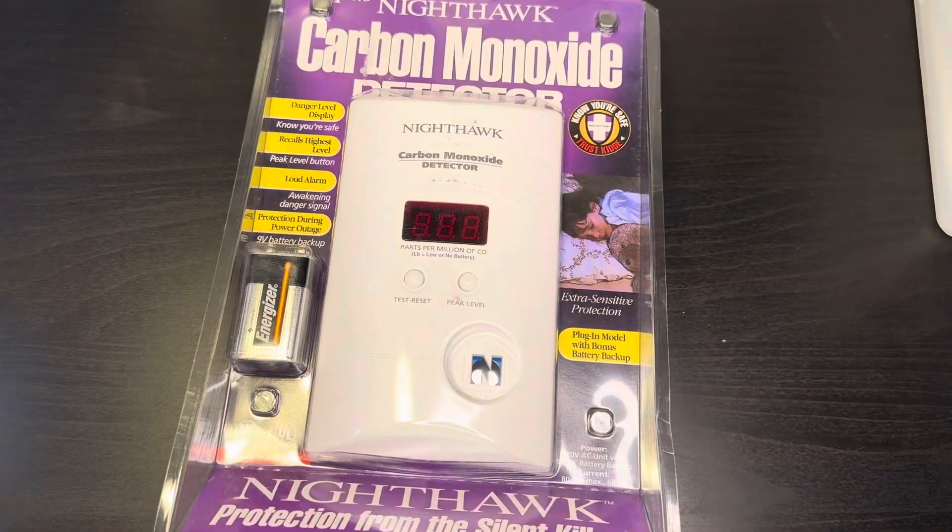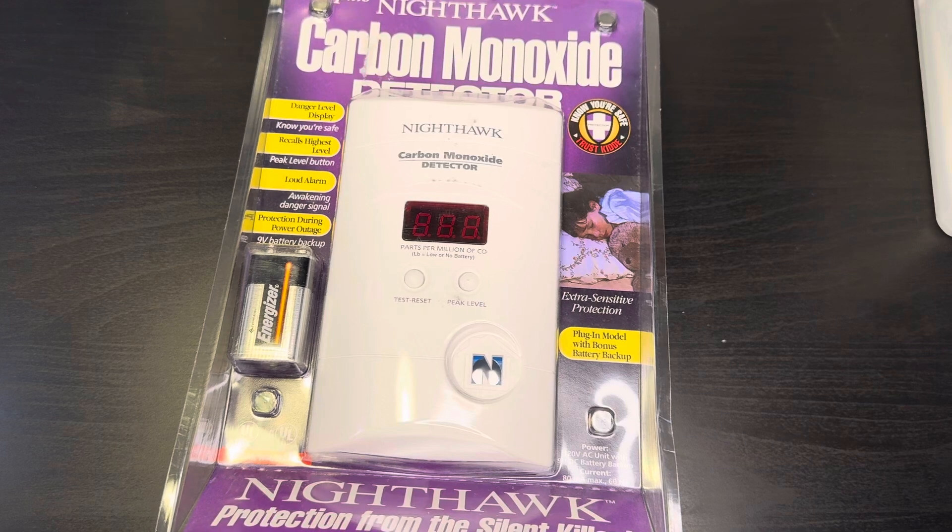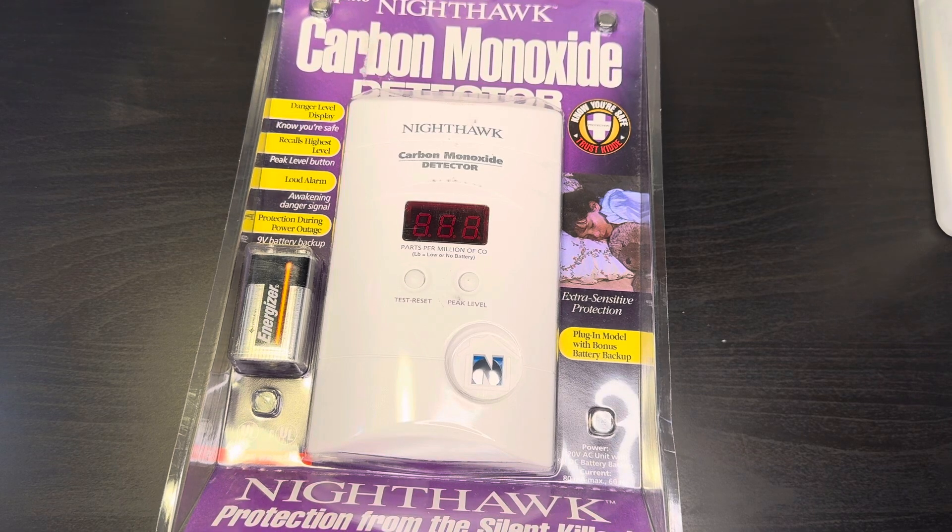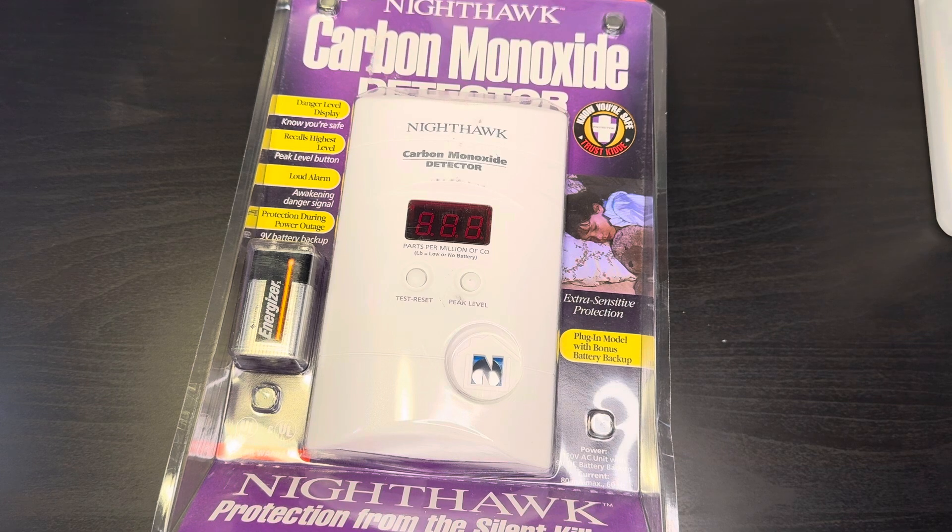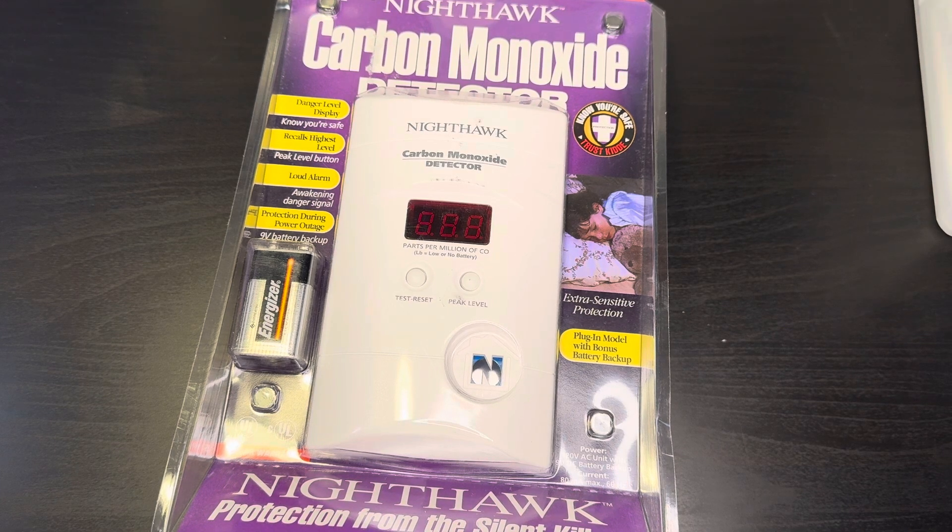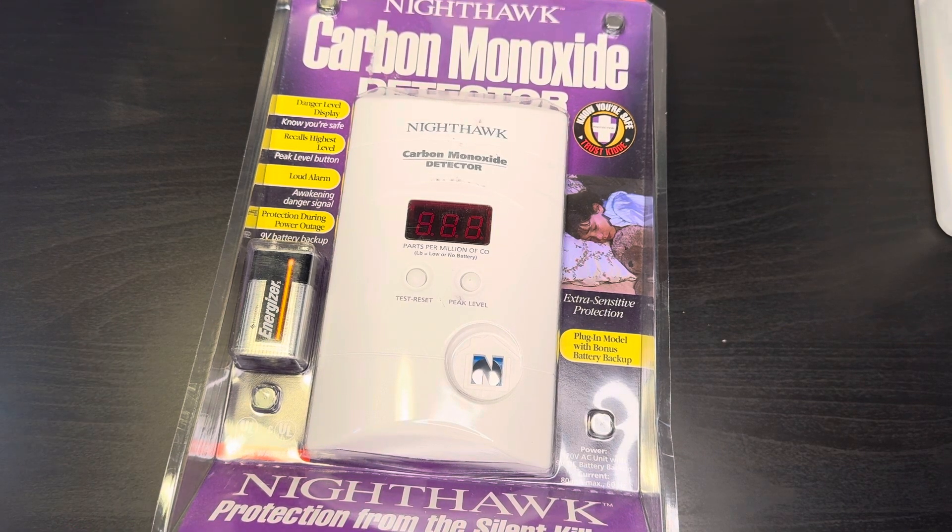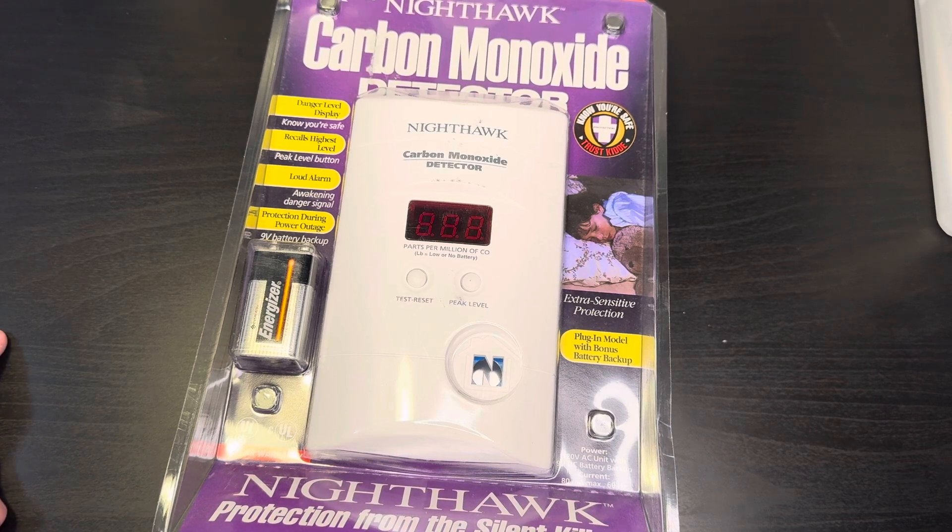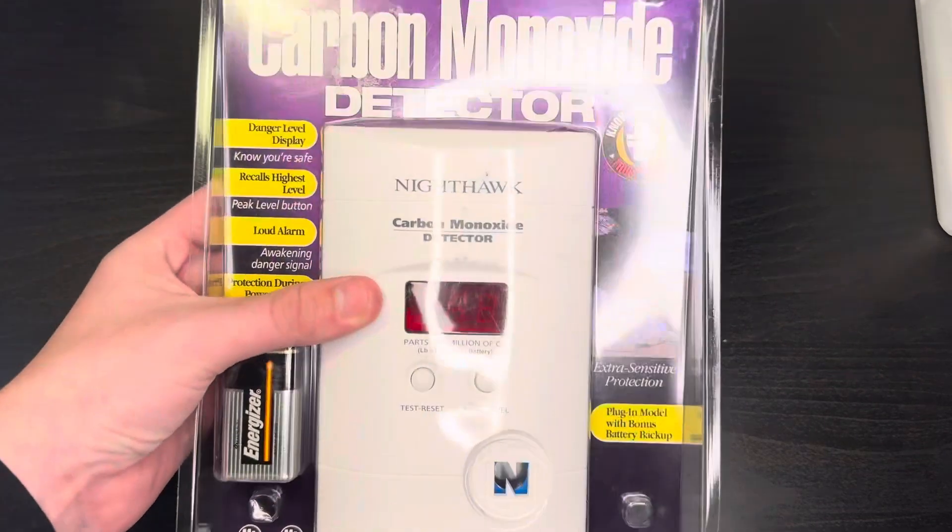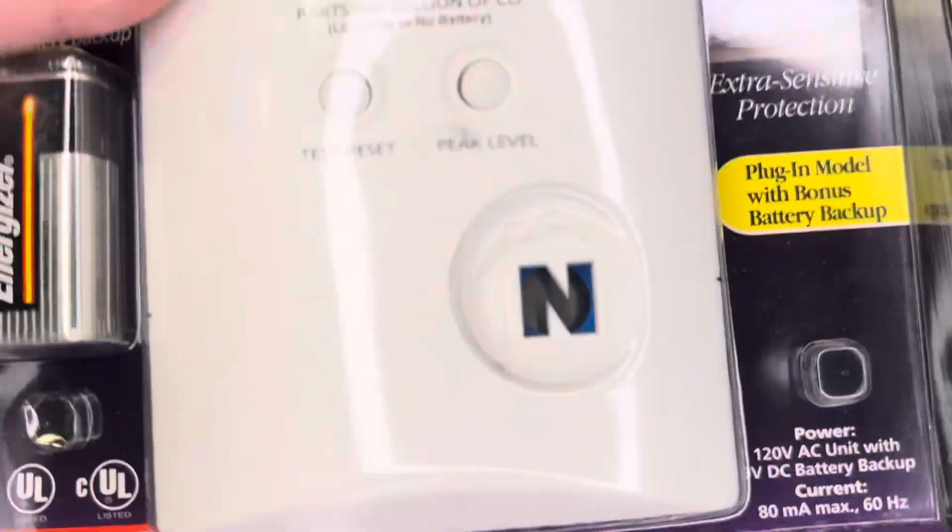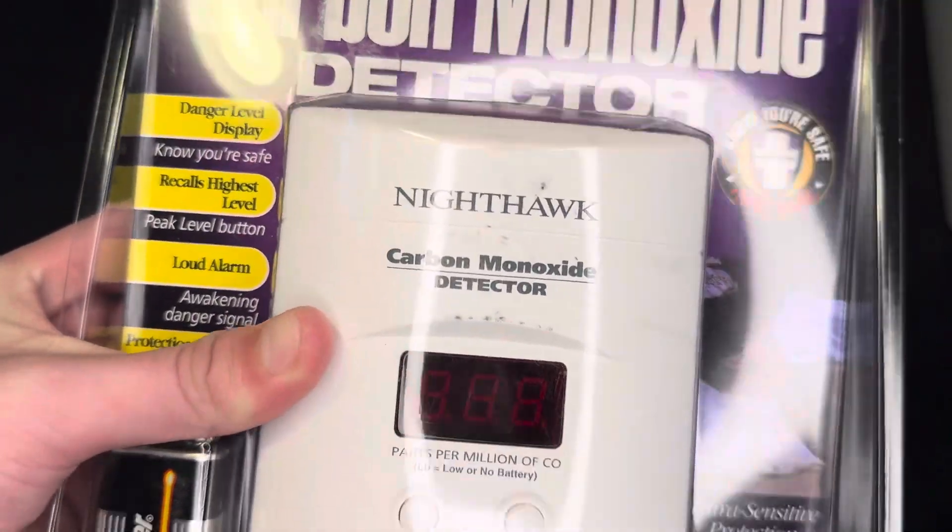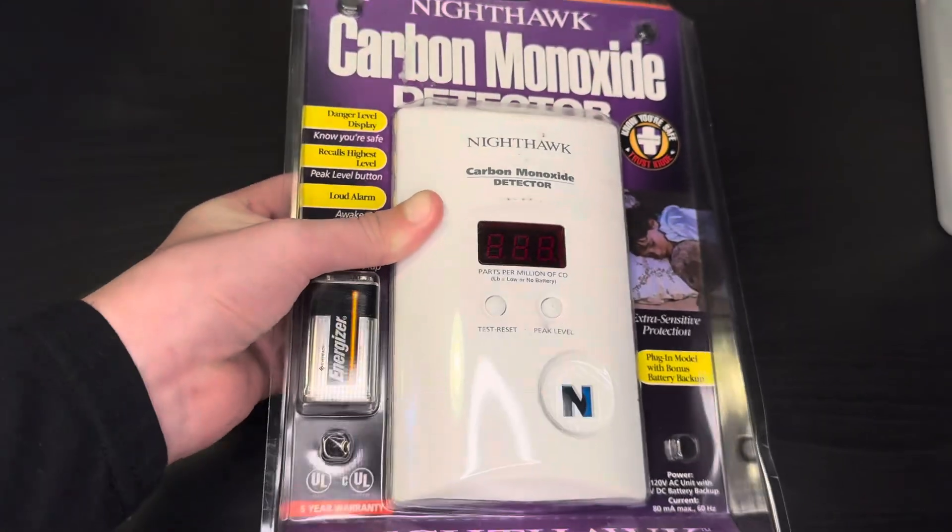It is this first-generation Nighthawk, Kidde Nighthawk Carbon Monoxide Alarm, model KNCLPP3. As you can see, this is unlike any other CLPP3. It has a blue piezo horn, as well as the Nighthawk labeling at the top.